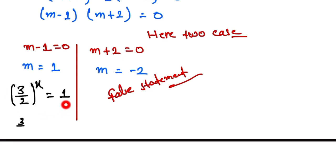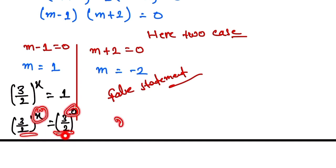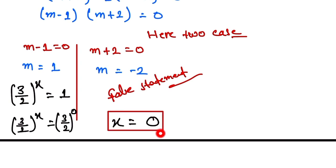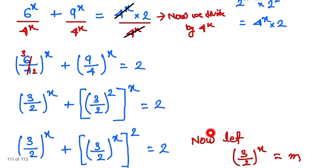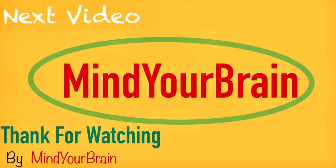Taking m equals 1, and recalling that m equals 3 by 2 to the power x, we get 3 by 2 to the power x equals 1. Since any number to the power 0 equals 1, we can write this as 3 by 2 to the power 0. Therefore x equals 0 is our final answer. Thank you so much for watching. If you like the video, please subscribe to our channel and share it with your friends.